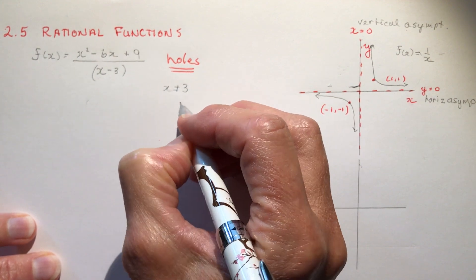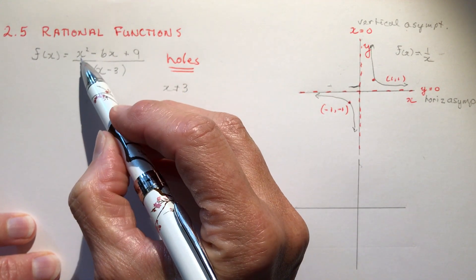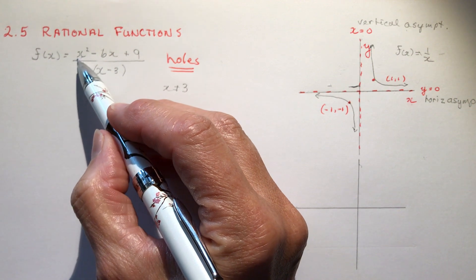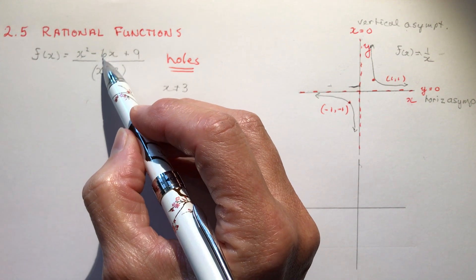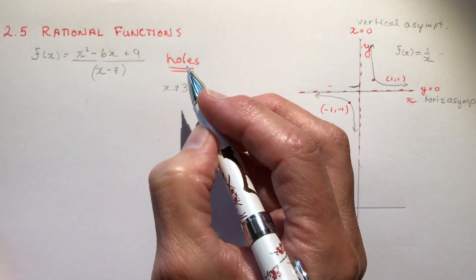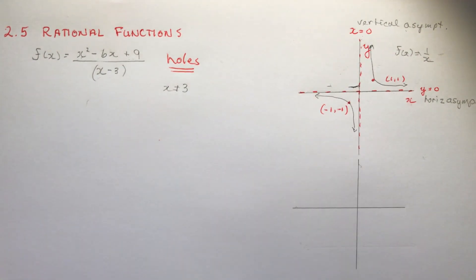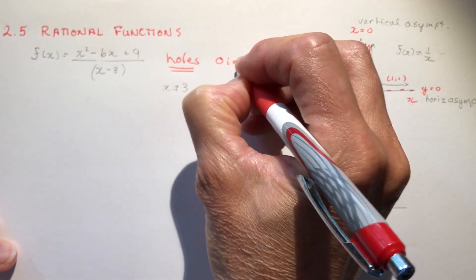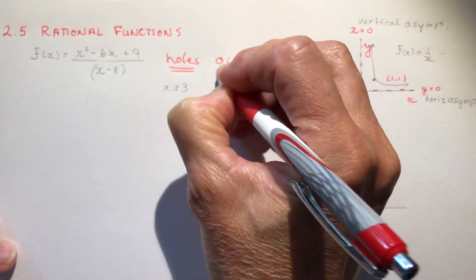But if you also plug that value in here you would have 3 squared is 9 minus 18 is negative 9 plus 9 is 0. So you get 0 in both the numerator and the denominator, 0 in both numerator and denominator.